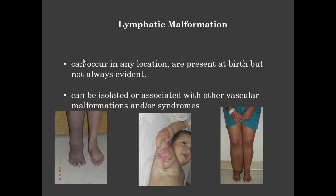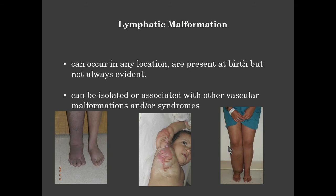Lymphatic malformations can occur in any location. They are present at birth but not always evident, and can also be diagnosed prenatally. They can be isolated or associated with other vascular malformations and/or syndromes. This is a patient with higher-stage lymphatic malformation and lymphedema, and a patient who had recurrent infection due to lymphatic malformation of the chest and arm that was treated surgically—if we saw him now, we would probably treat him medically.